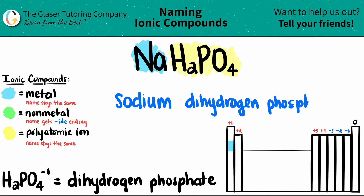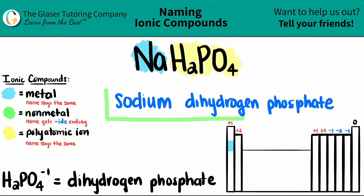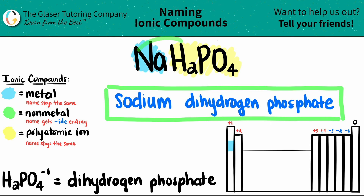Now you're done. I would just do a quick check to see if you need a Roman numeral, but since sodium is not a transition metal and it's not in that block, I don't need a Roman numeral and therefore I am done. So NaH2PO4 is sodium dihydrogen phosphate.